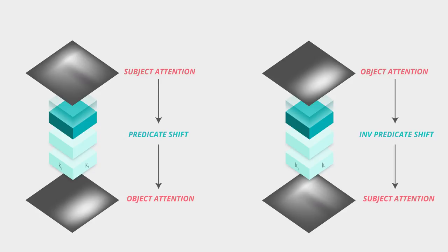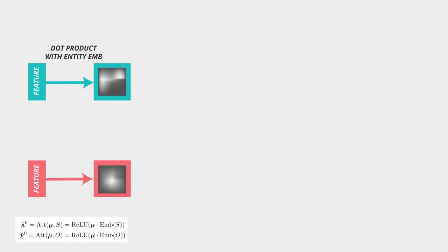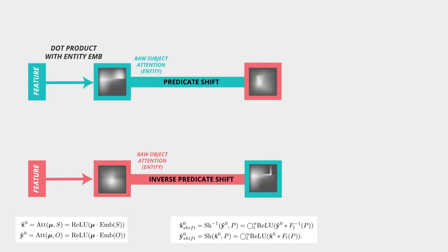Now once I have learned this, I have all that's required to have this message passing magic. I start with an entity map for subject and object. Then I use this predicate shift operator to find out the attention of my object given the subject's attention map and vice versa.